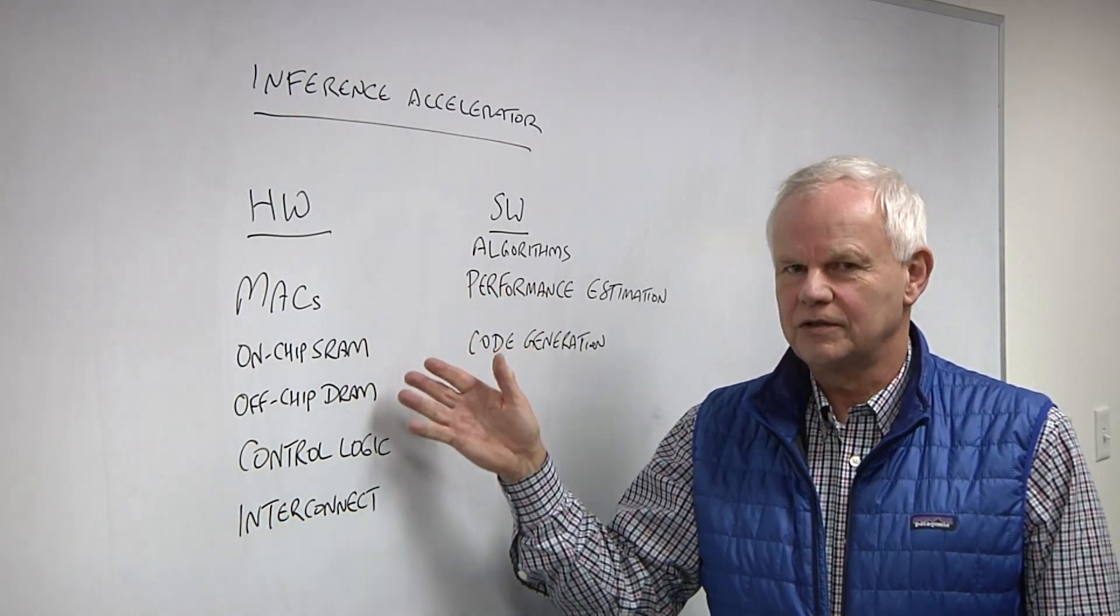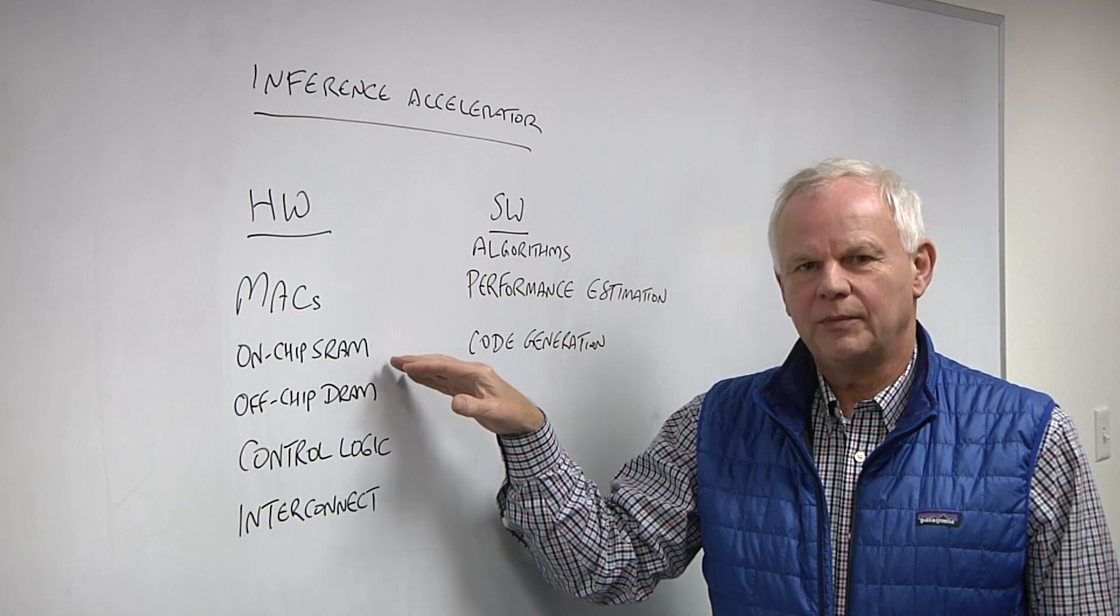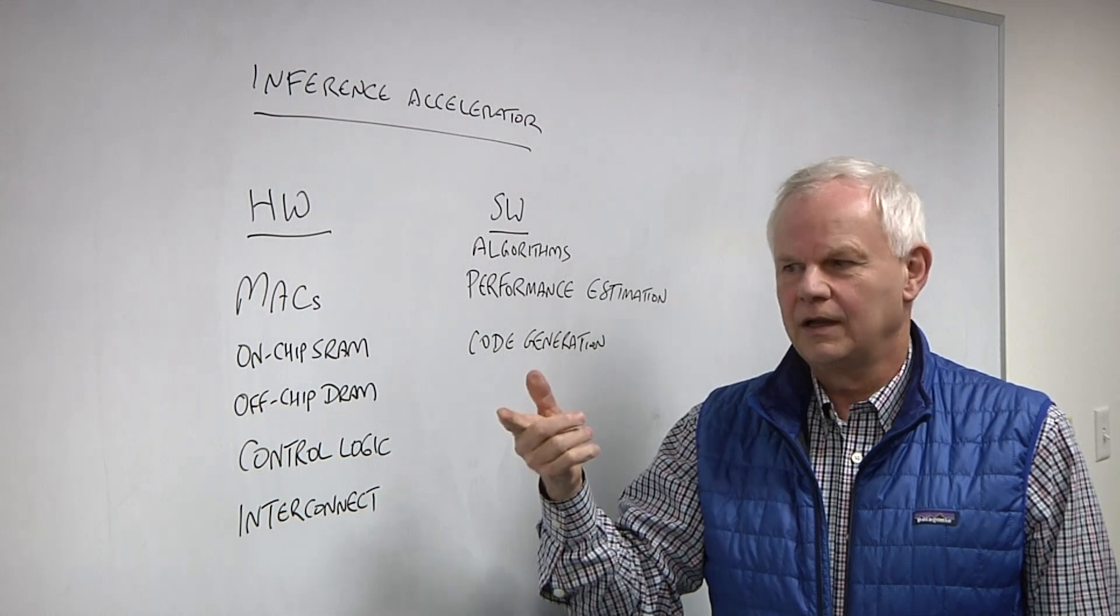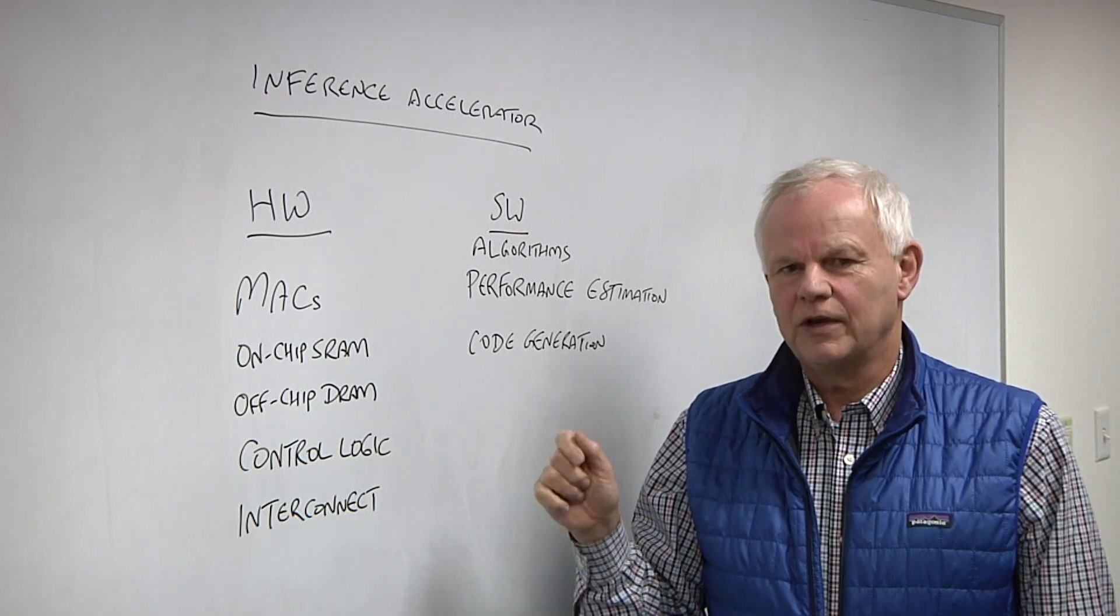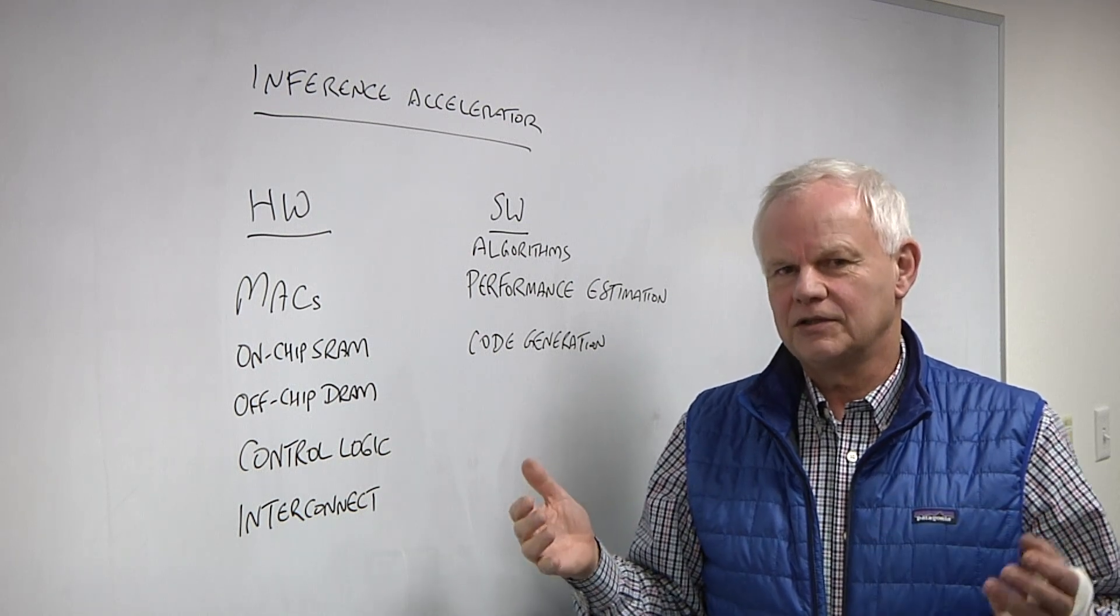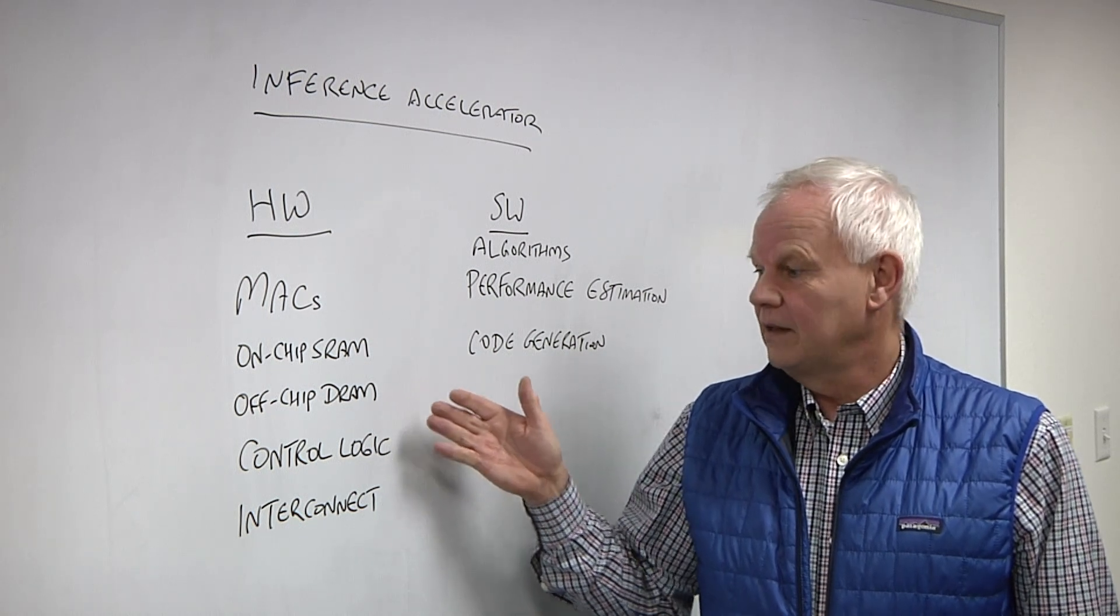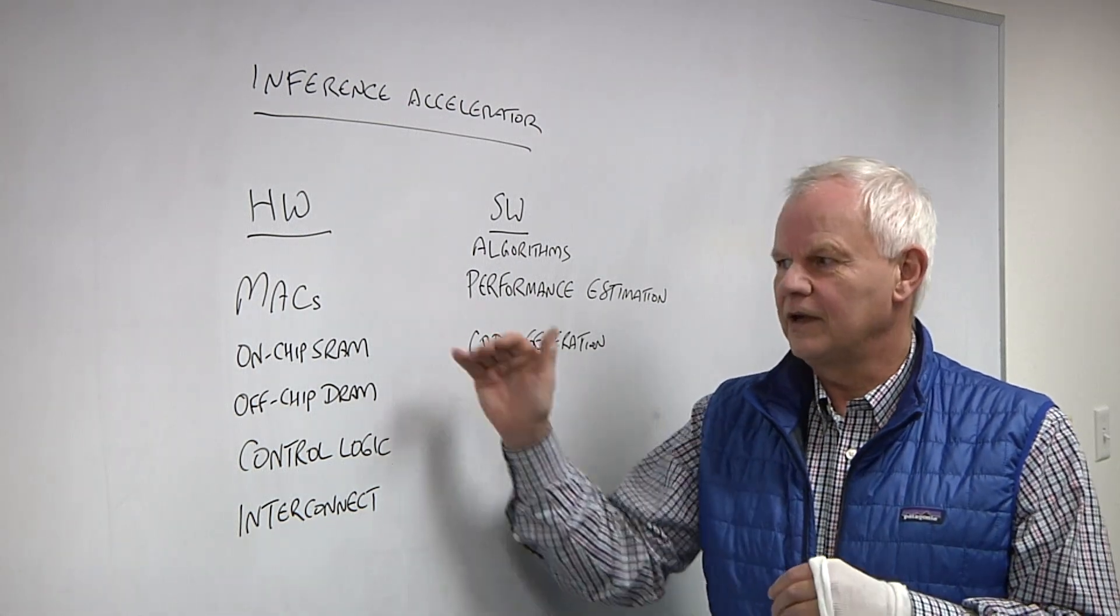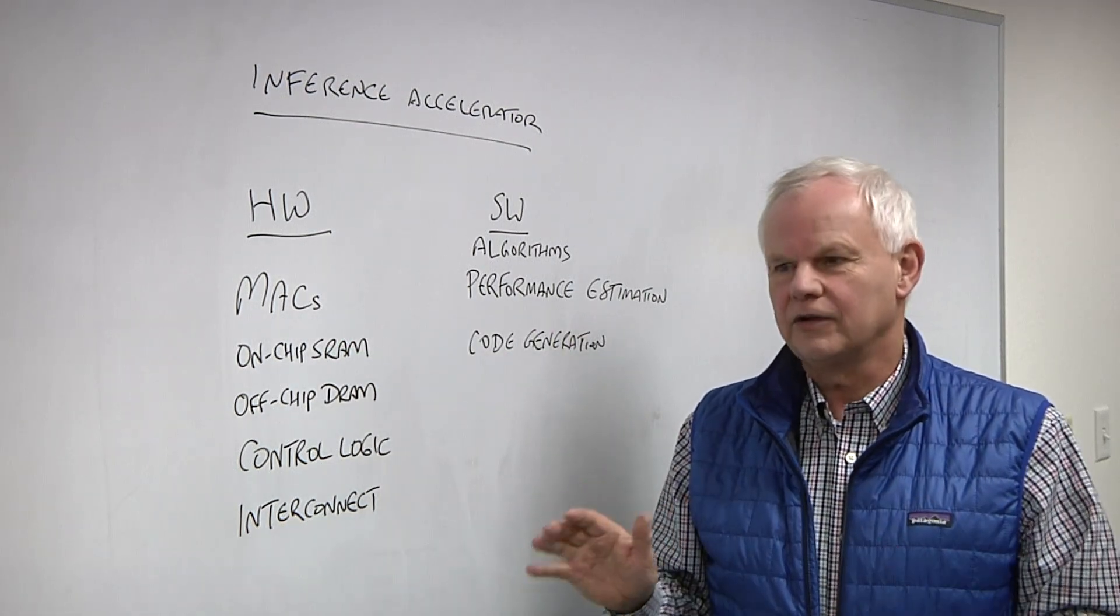Systolic arrays, one-dimensional systolic arrays, individual MACs. You have to have on-chip SRAM. There's a lot of intermediate activations that have to be written and stored and recycled. And unless the chip is really big, you're going to have to have off-chip DRAM. Different chips will have very different amounts of memory and how they organize the memory.